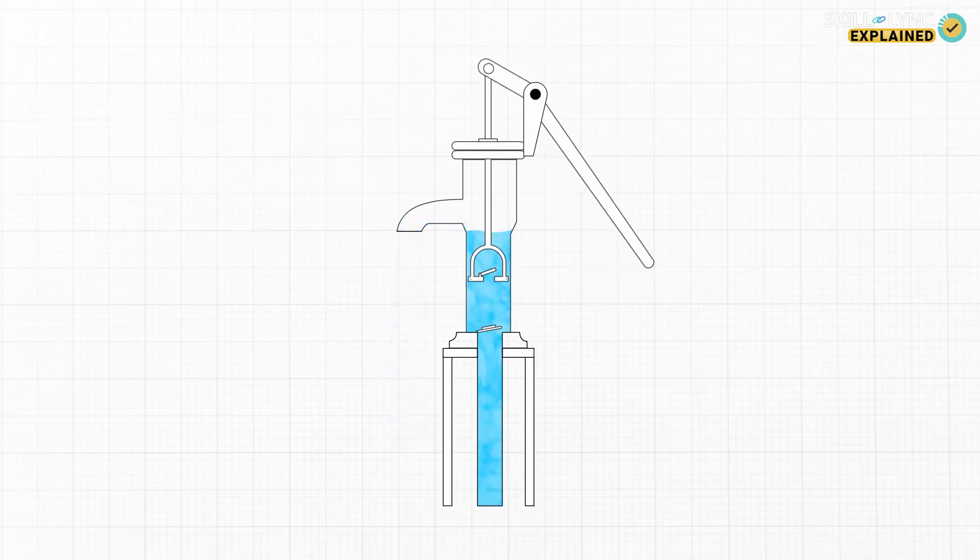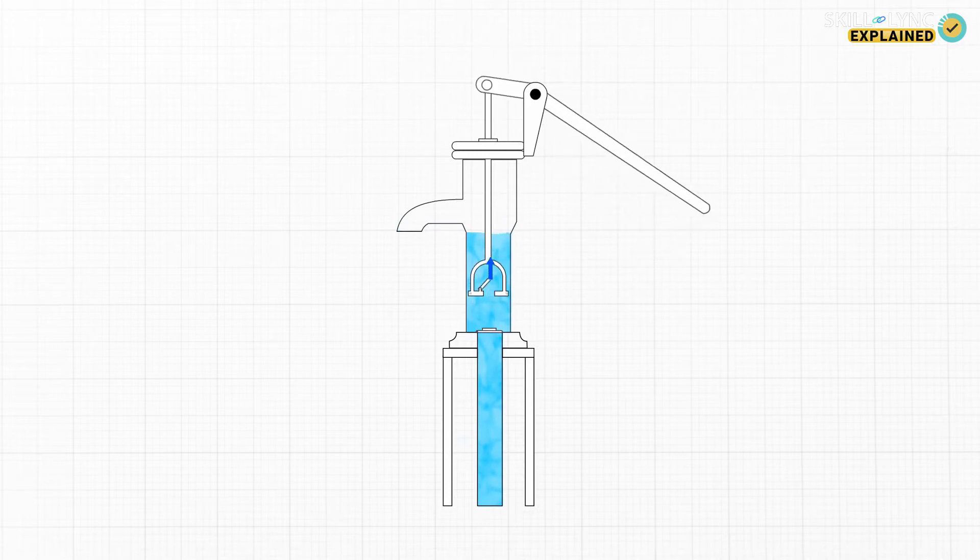When the plunger moves down the valve attached to the piston opens up allowing the water to enter the spout, but the valve at the bottom closes due to the downward pressure of water which is why these pumps have to be worked a few times before we can get water flowing. And this is also a very tiring process.